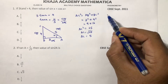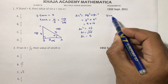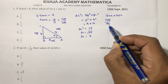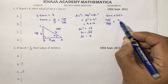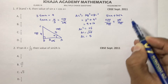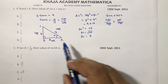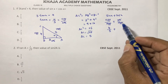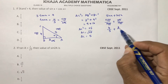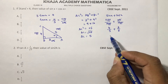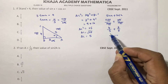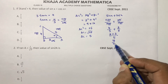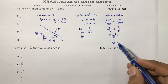Now we need to find sin x plus cos x. Sin theta is opposite by hypotenuse and cos theta is adjacent by hypotenuse. So sin x is 4 by 5 and cos x is 3 by 5. Adding gives 4 plus 3 over 5, which is 7 by 5.